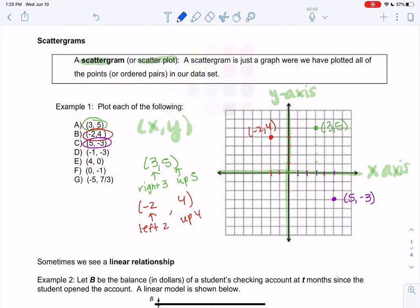Let's do negative 1, negative 3. So negative 1 tells me to go to the left, negative 3 tells me to go down, and they meet right there.